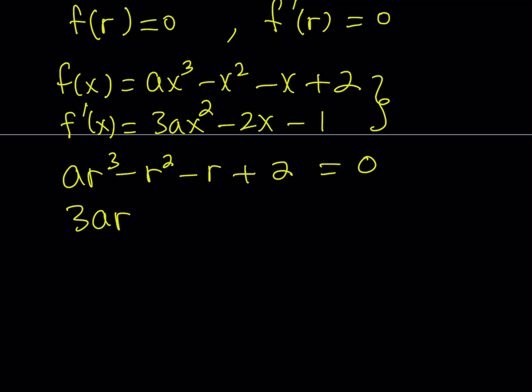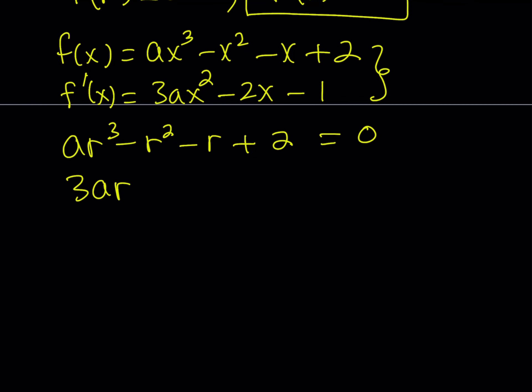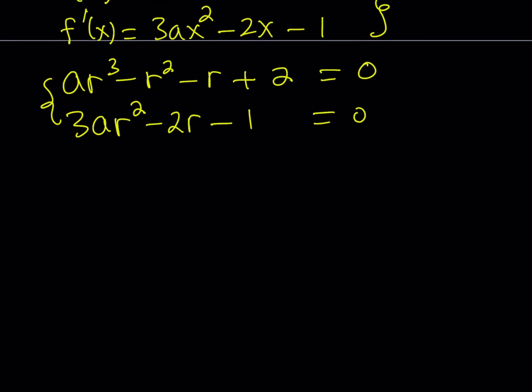The second equation, if I replace x with r using this idea here that f'(r) needs to be 0, then I get 3ar² - 2r - 1 = 0. Looking at this system of equations, we have two variables and two equations, so hopefully we're going to be able to solve this equation. And this is the first method.